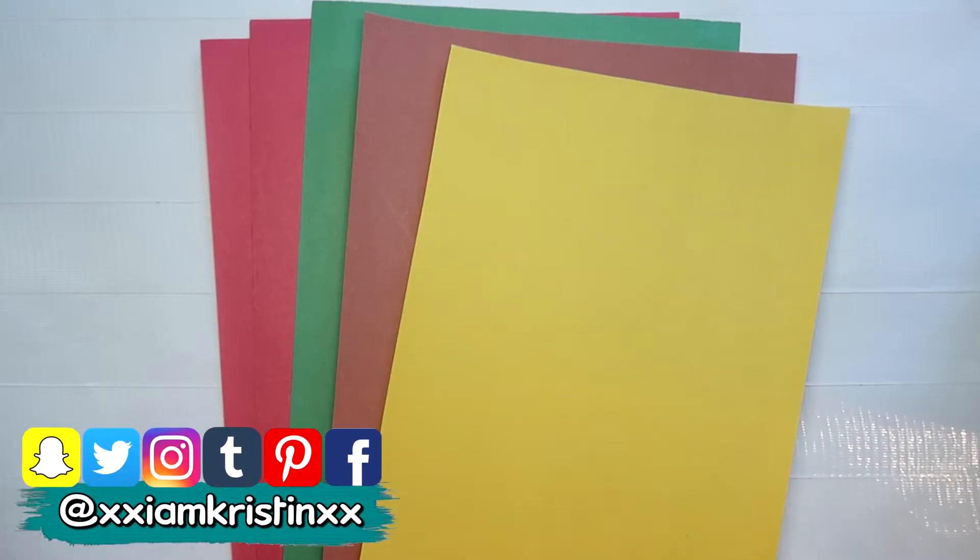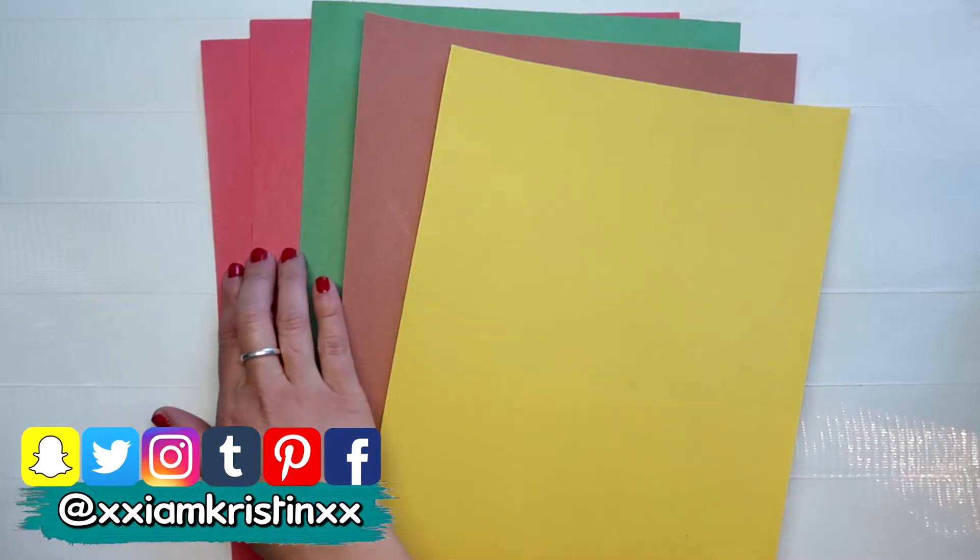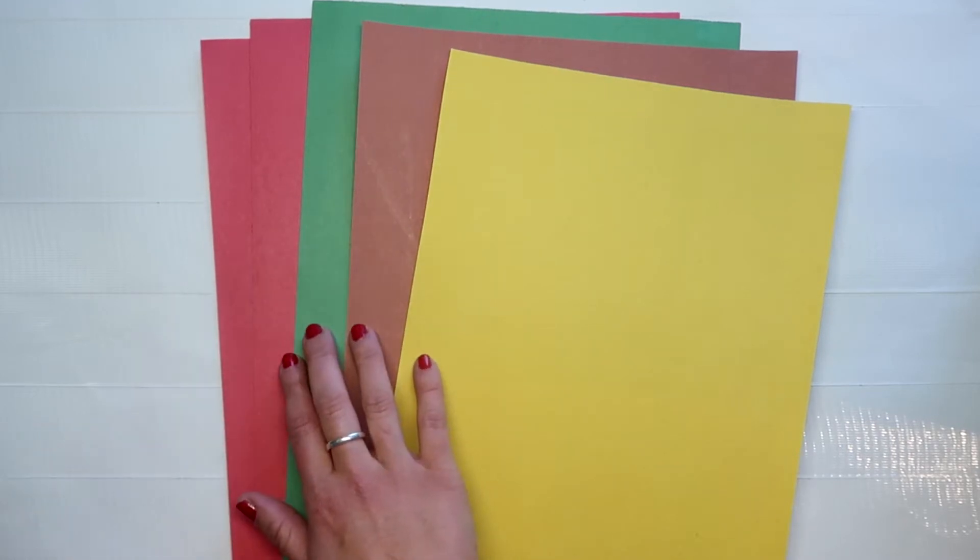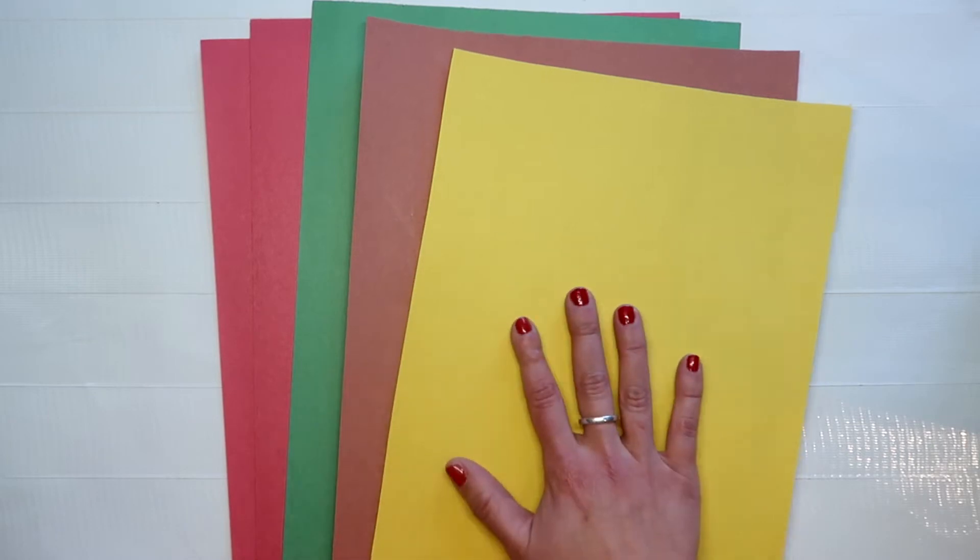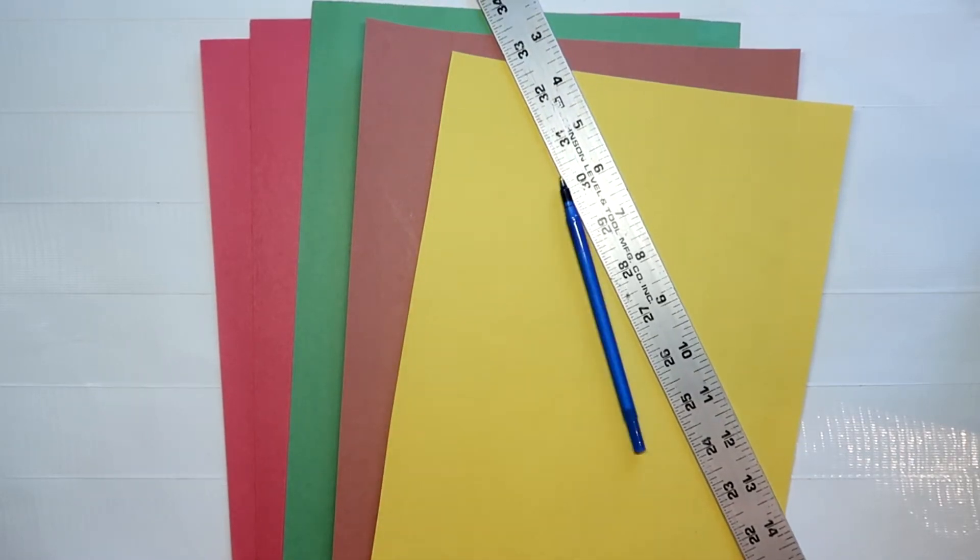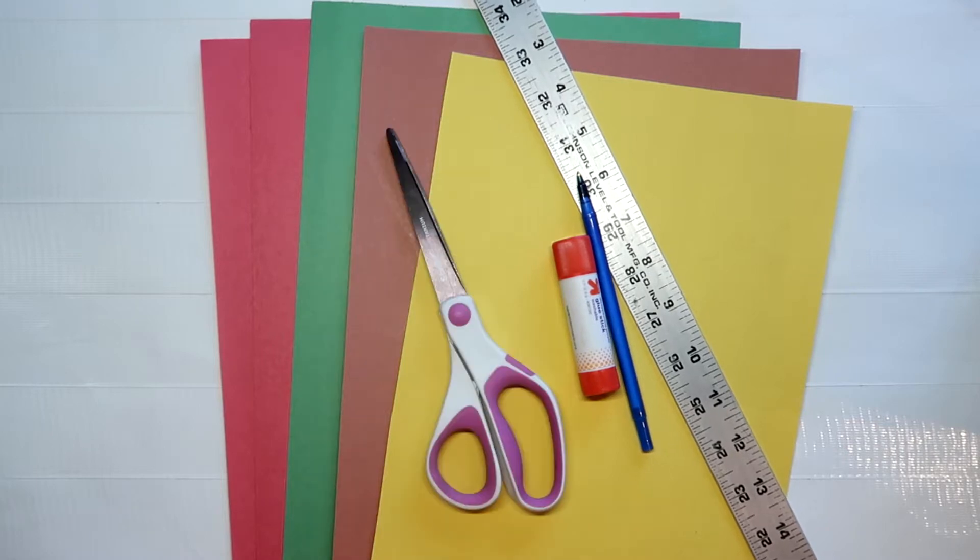For this project you'll need a bunch of construction paper. You'll need two sheets of whatever desired color you want for the back of your card, one sheet of green, one sheet of brown, and one sheet of yellow. You also need a ruler, a pen, a glue stick, and some scissors.